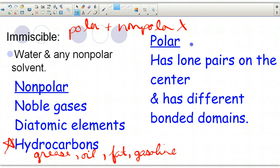And then polar typically would be things like water, ammonia, CHCl3, things like that.